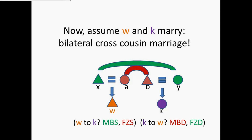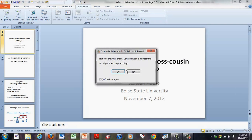If they get married, this is what we call a bilateral cross-cousin marriage — when W marries K and they are bilateral cross cousins to each other. W is both the mother's brother's son and the father's sister's son relative to K, and K is both the mother's brother's daughter and the father's sister's daughter relative to W. That's all.